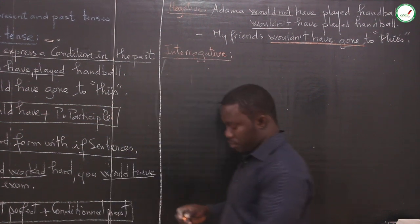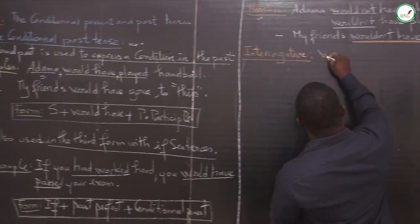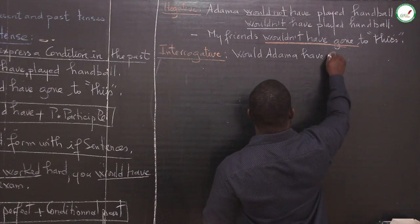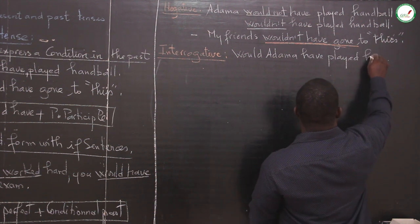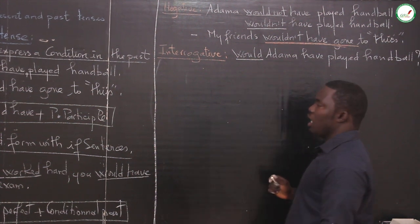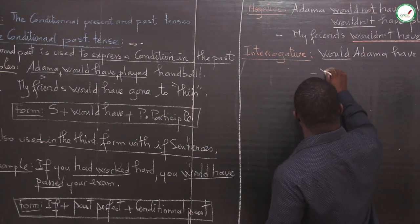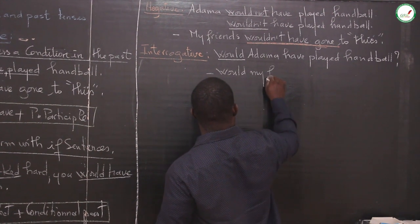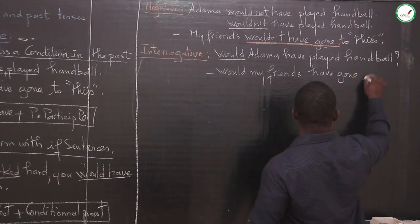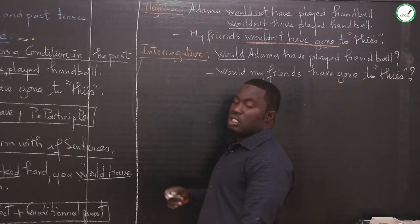Interrogative form: Would Adama have played handball? My friends would have gone to chess becomes: Would my friends have gone to chess? This is the interrogative form.